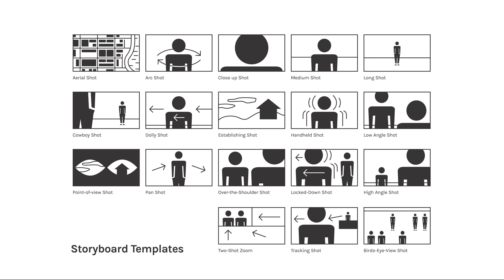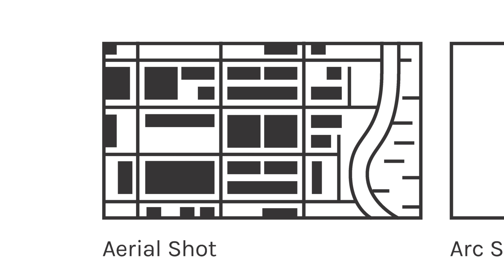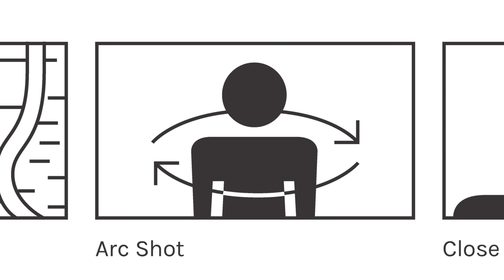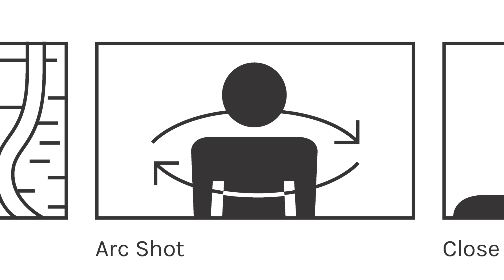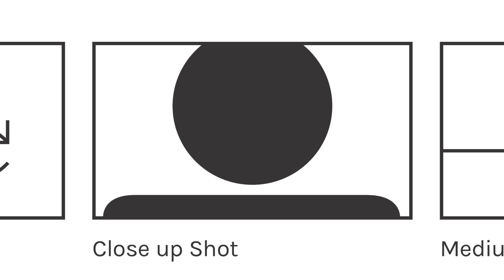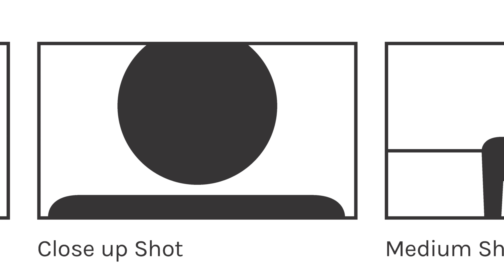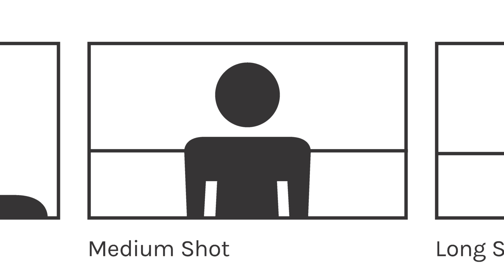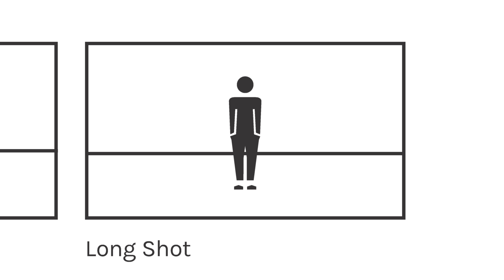Let's take a look at each one in depth. First up we have the aerial shot, which is that drone view of the city looking down — this could also be from a building pointing your camera down on the ground. We've got the arc shot, where the cameraman circles around the subject. We've got the close-up shot, which is someone's face really up close. We've got the medium shot, which is the head and shoulders in the frame. And the long shot, where the subject is way off in the distance and maybe walking closer.